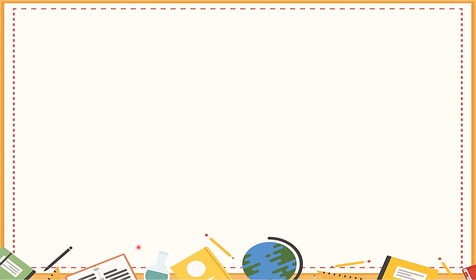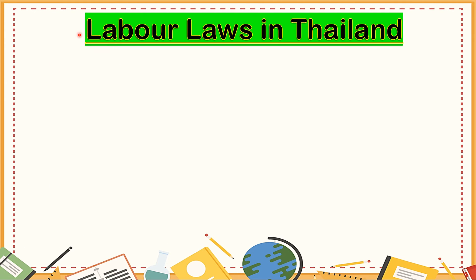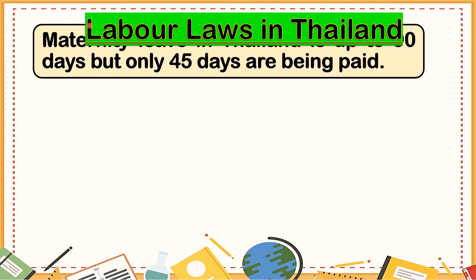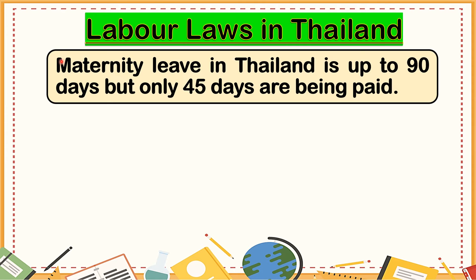Let us study the labor laws in Thailand. Maternity leave in Thailand is up to 90 days, but only 45 days are being paid. If you give birth to a child, you can take care of your baby for 90 days, but your employer will only pay you for the first 45 days. For the remaining 45 days, it will be unpaid. That is the law of Thailand.